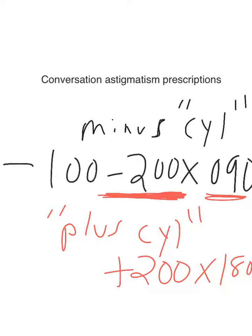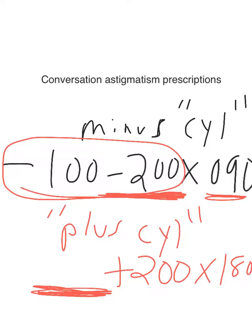And the third step, the sphere number—to find out the sphere number, you have to add the first number and the second number. You have to add these two numbers. So a minus 1 plus a minus 2 is a minus 3.